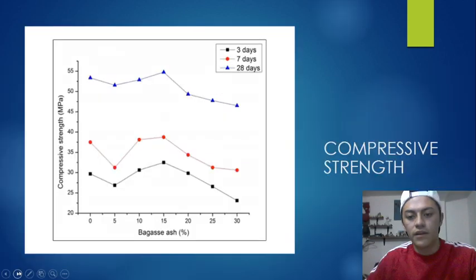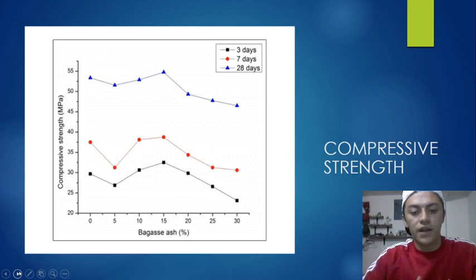The compressive strength graph below shows the relationship between the force to compression with the percentage of bagasse ash and the days of curing, where it's seen that 15% of bagasse ash is the one that has the best behavior.